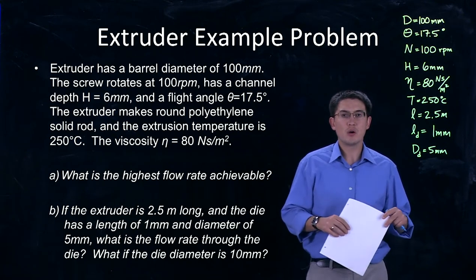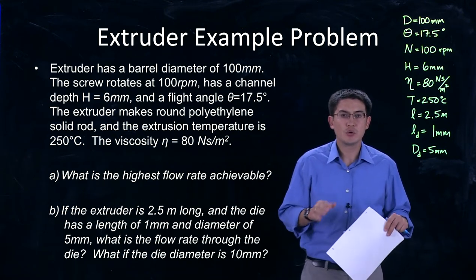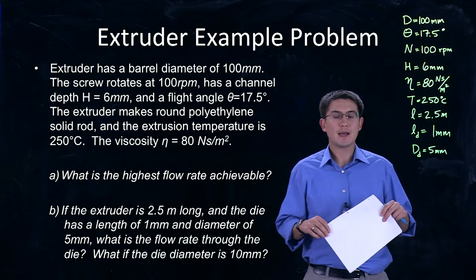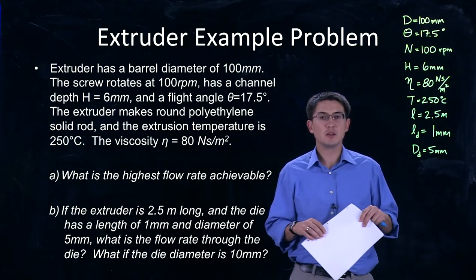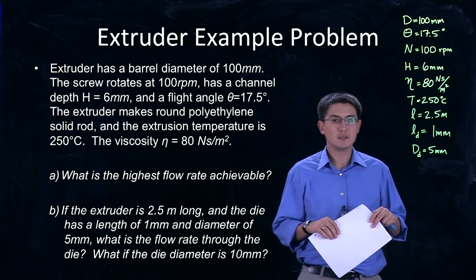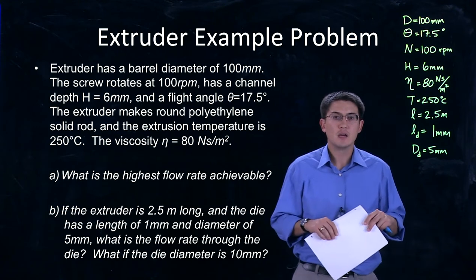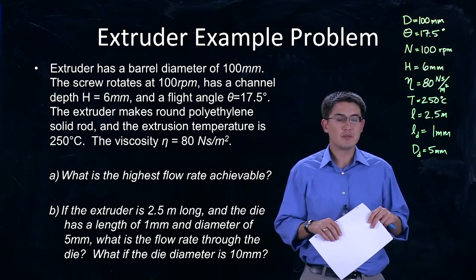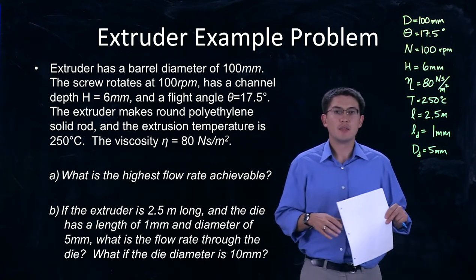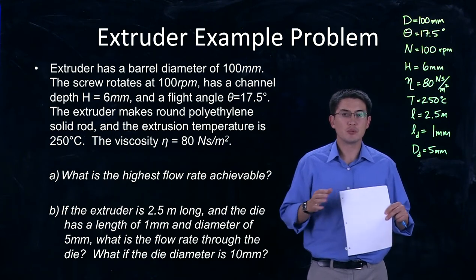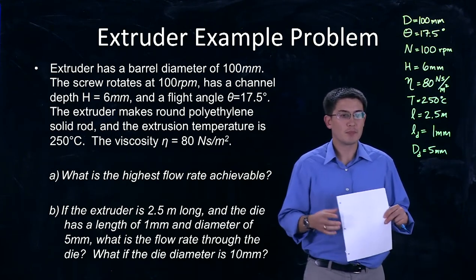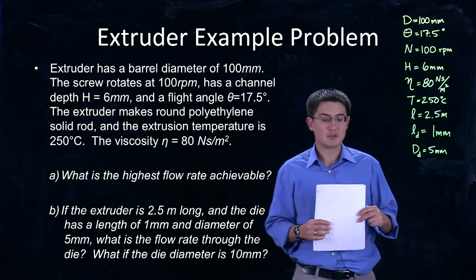Second, we want to know if the extruder is 2.5 meters long and the die has a length of 1 millimeter, also known as the die land, and the diameter of that is 5 millimeters, then what will the flow rate through the die be? And what will happen if we increase that die diameter to 10 millimeters?